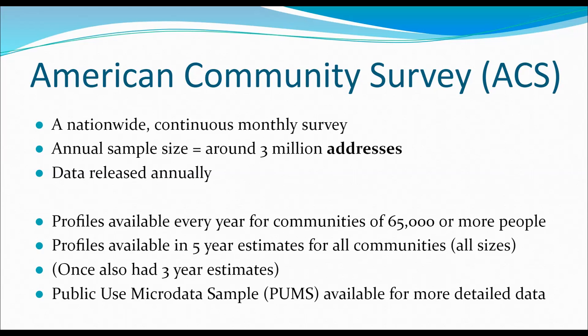If you live in a place with 65,000 people or more - a city or county - you have annual ACS data with a full range of very detailed questions: housing data, occupational data, and more. If you live in a smaller place, you have five-year data. There's also PUMS data for very detailed research, usually requiring a direct data download or a census research center such as the one at Duke.